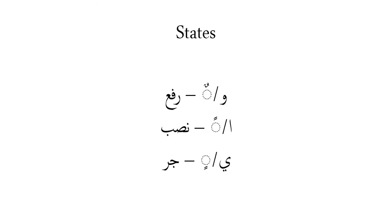Another important thing to cover are the states in Arabic language. An ism in Arabic, commonly translated as a noun, is something that has a meaning on its own and is not attached to tense — not past, present, or future tense. For example, Kitab — a book — you imagine a book, and it's not related to any tense. But if I say 'he ran,' that's attached to past tense, so that is not an ism; that's a fi'l, which is a verb.